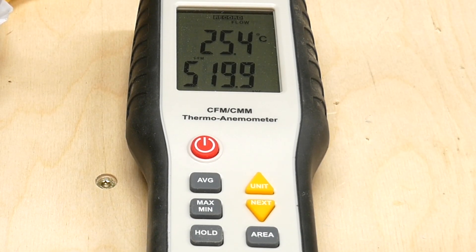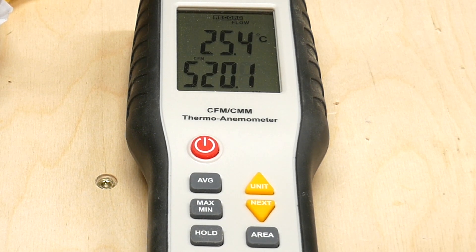But it doesn't really matter, because it'll be the same for both connectors, and all we want is some numbers we can compare. So it looks like we get about 520 with the T.